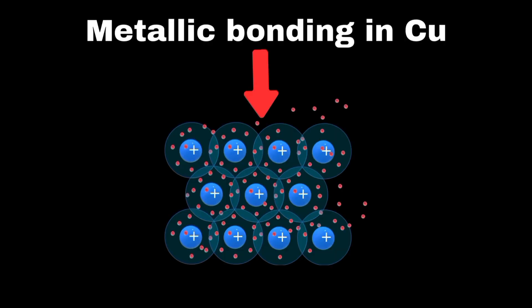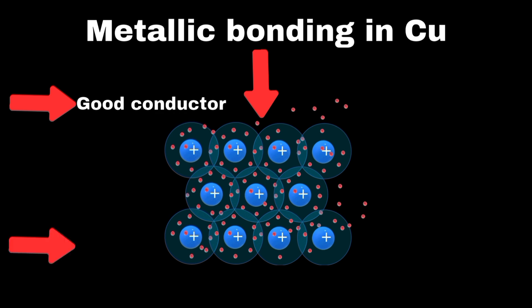For example, copper's metallic bonds make it an excellent conductor of electricity, which is why it is widely used in electrical wiring.